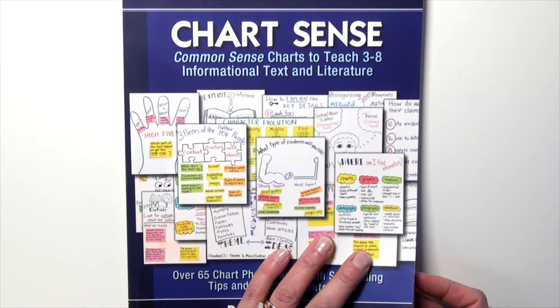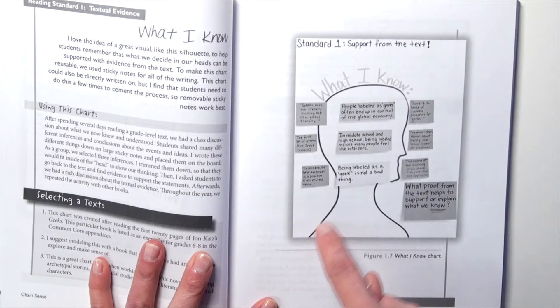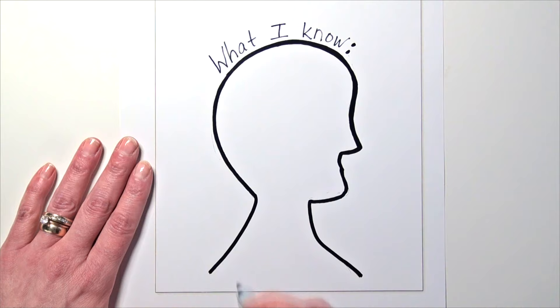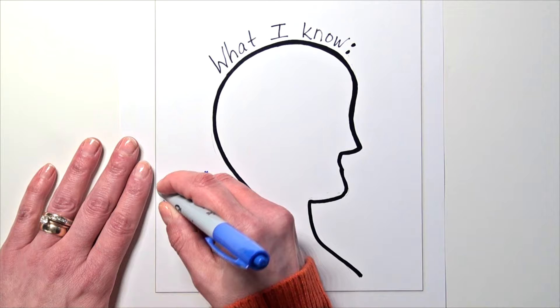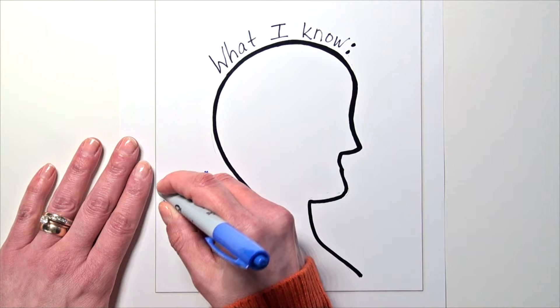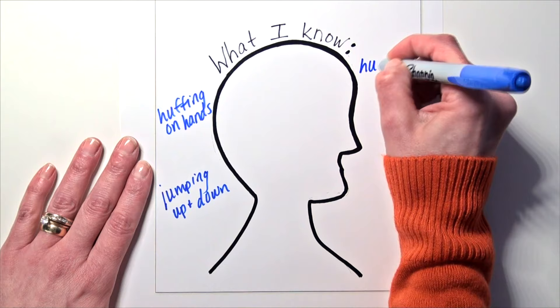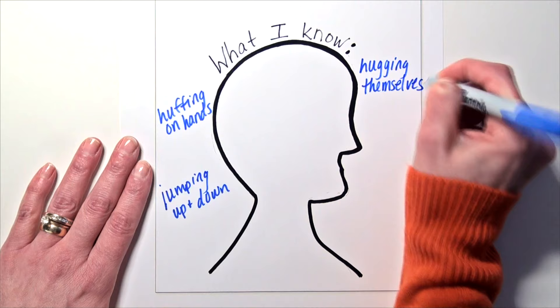I've fallen in love with the process that Roz Linder outlines in her book Chart Sense. She suggests the concept of a silhouette — students first collect the relevant details from the text, then think about what they mean in order to generate an inference. That is step three. Recalling the audio example, relevant details include: kids were jumping up and down, huffing on their hands, hugging themselves.